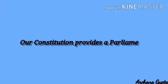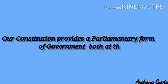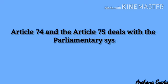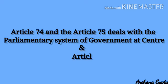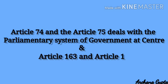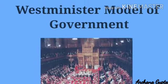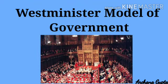Our constitution provides a parliamentary form of government both at the centre and in the states. Article 74 and 75 deal with the parliamentary system of government at the centre, and Article 163 and 164 deal with it in the states. The idea of the parliamentary form of government is taken from the British constitution, which is why it is also known as the Westminster model of government.